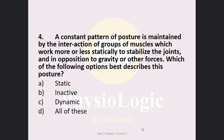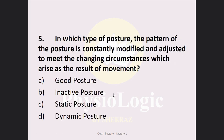MCQ number 4: A constant pattern of posture is maintained by the interaction of a group of muscles which work more or less statically to stabilize the joints, in opposition to gravity or other forces. Which option best describes this posture? Option A: static, Option B: inactive, Option C: dynamic, Option D: all of these. You should focus on the word that the group of muscles work statically to stabilize the joints — the work is isometric, not concentric or eccentric. So the correct answer is Option A, static posture.